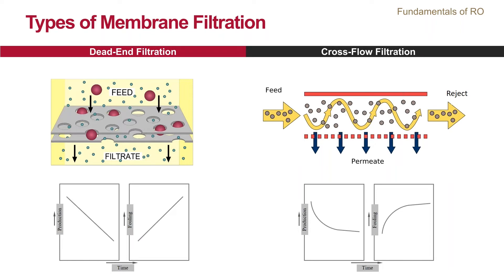In cross-flow filtration, feed water passes tangentially over the membrane surface rather than perpendicular to it. Water and some dissolved solids pass through the membrane, while the majority of dissolved solids and some water do not. Cross-flow helps to minimize fouling or scaling of the RO membrane. In theory, cross-flow is a continuous operation, but in practice it is not always enough to prevent all fouling and scaling — periodically, the membranes need to be taken offline and cleaned.